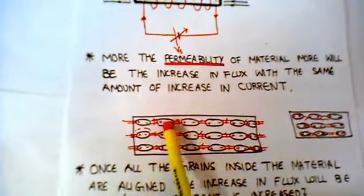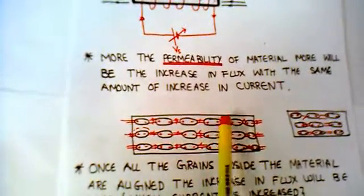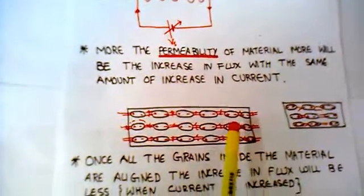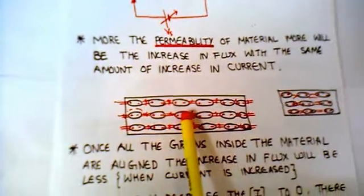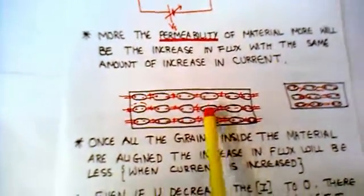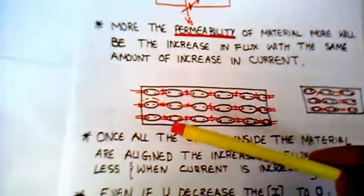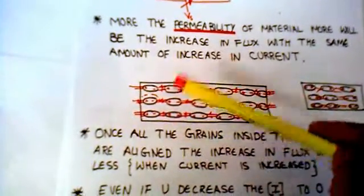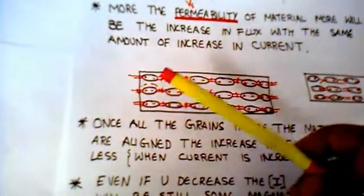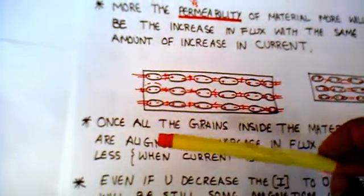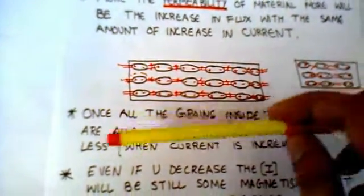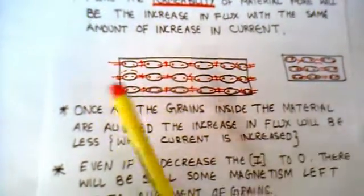Because this is the only position in which they will experience a minimum reluctance. So if you keep on increasing the current, the grains inside the material keep on aligning, and because of which the flux is increased.